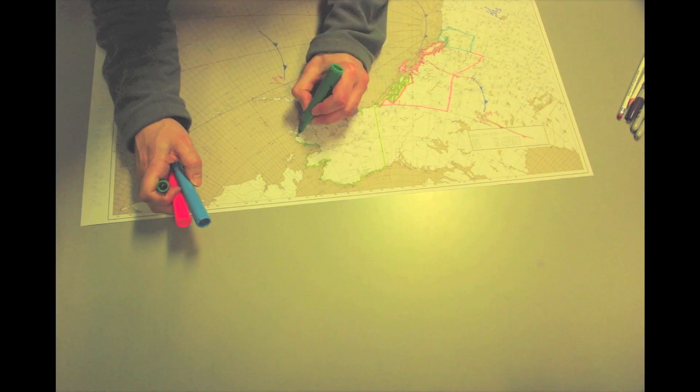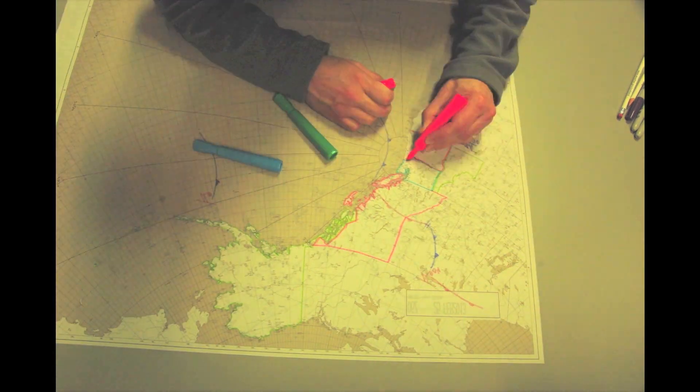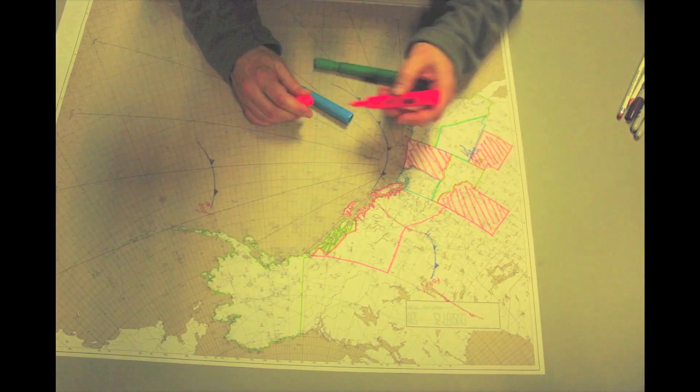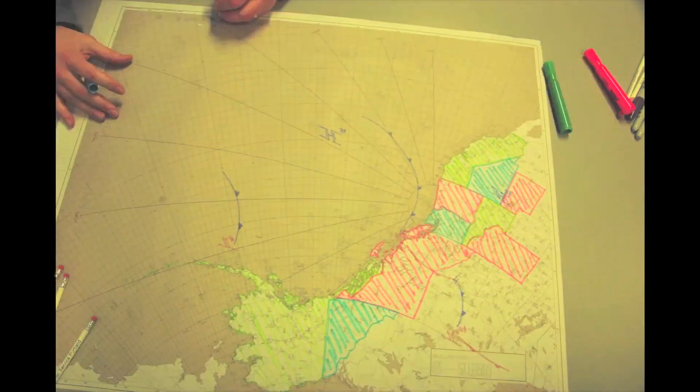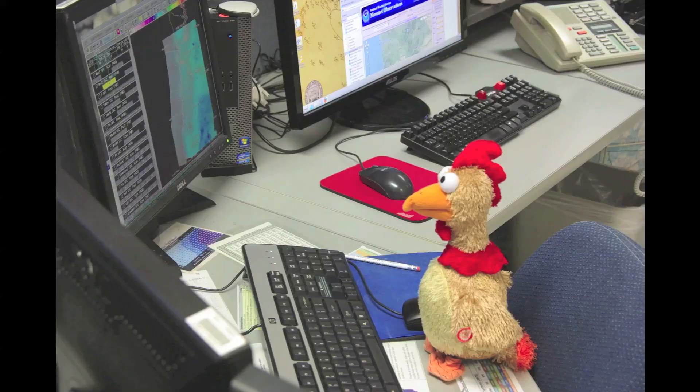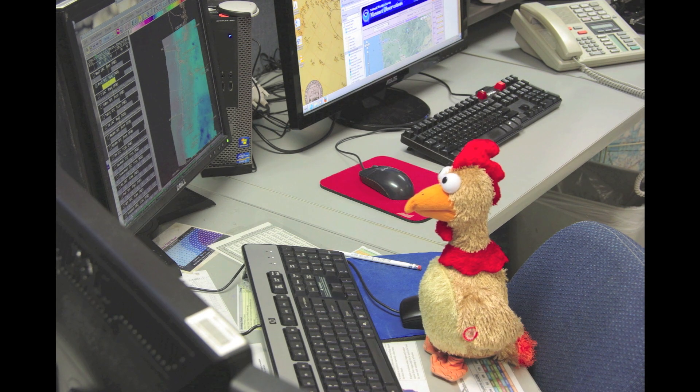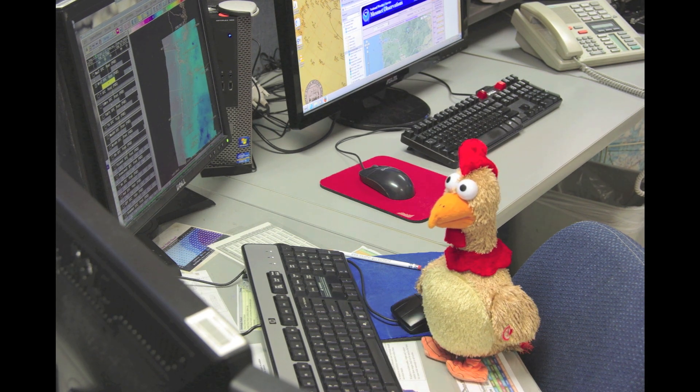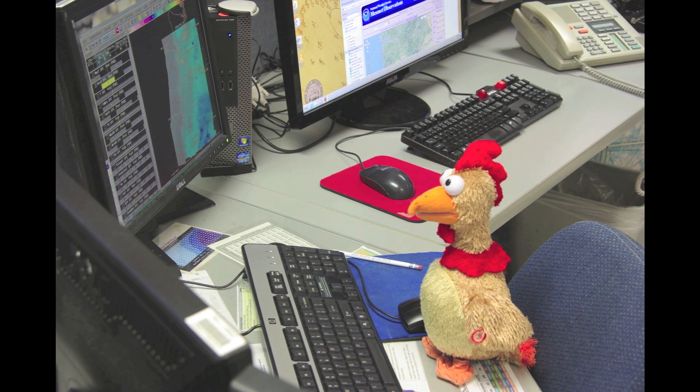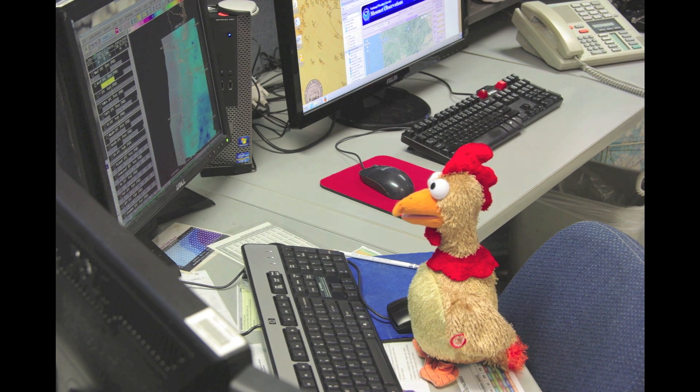It also helps him find fronts, which divide cold air from warm air, and are often areas where the weather is the most interesting. Computer models help Larry to see what the weather maps might look like in the next few days. There's a lot of stuff for him to look at.